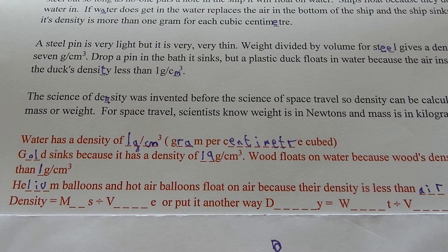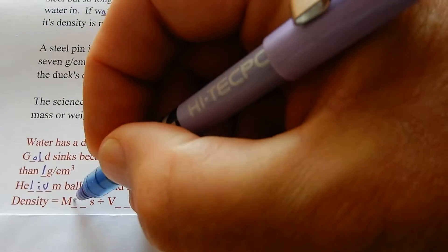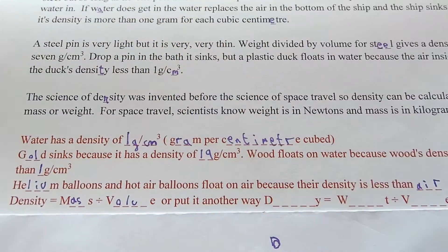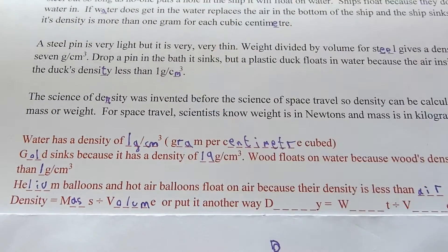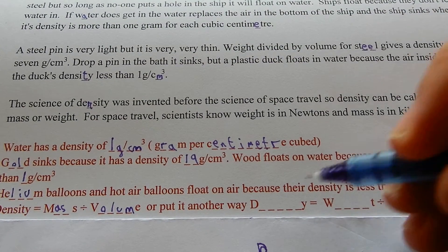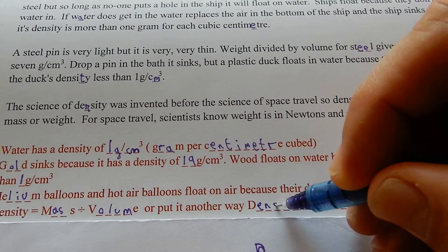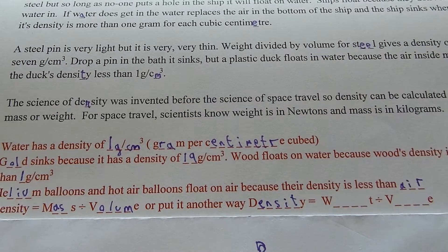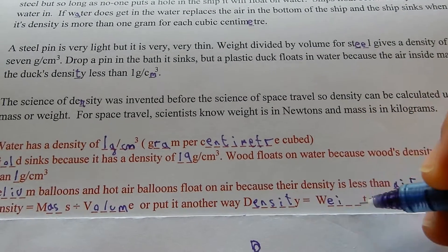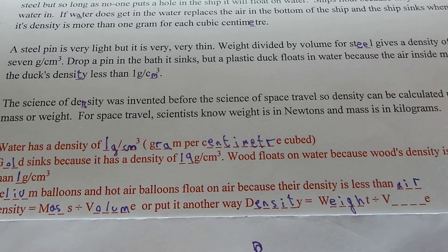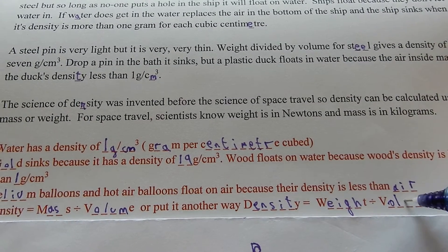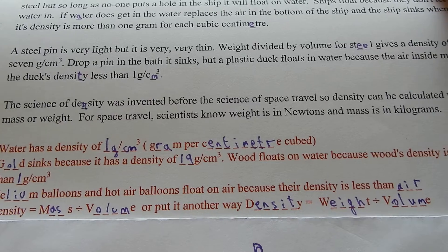Density equals mass divided by volume. Or put another way, density equals weight divided by volume. You can use either set of units and you'll still get the same number.